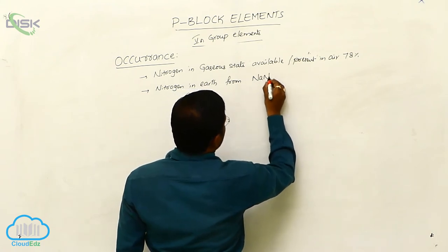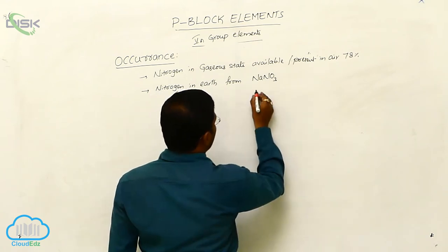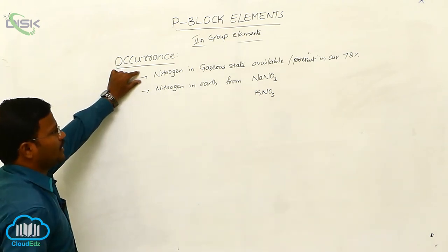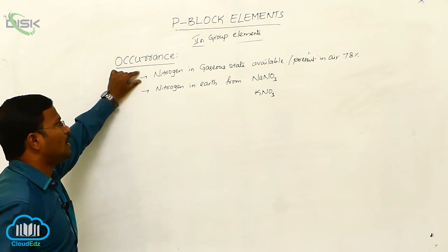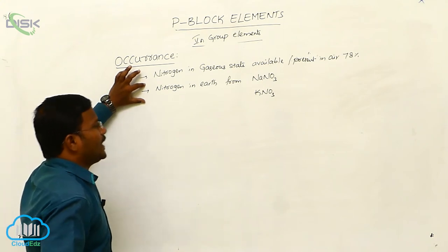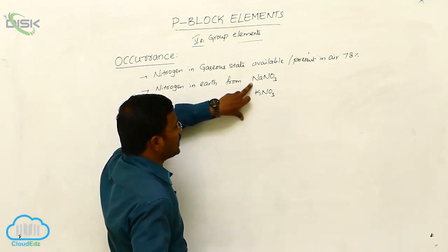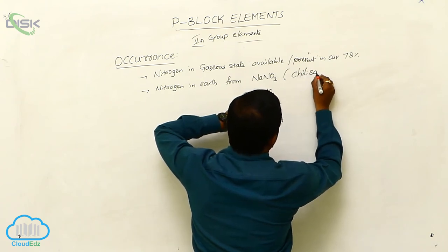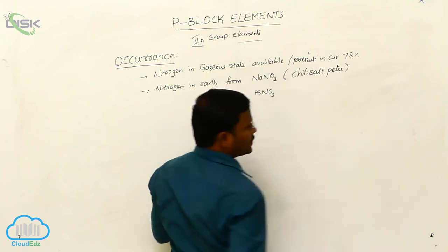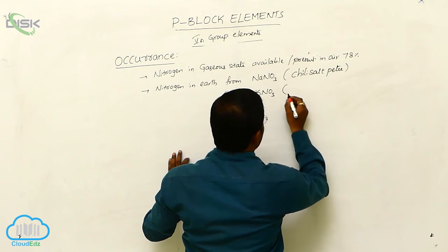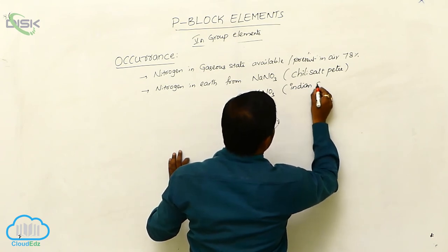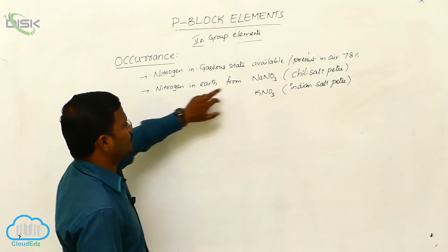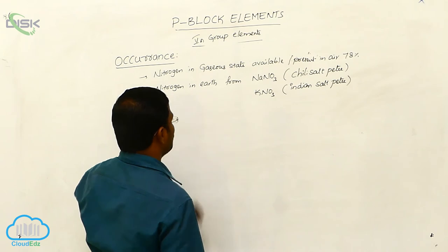The same nitrogen is available in the earth in the form of sodium nitrate and potassium nitrate. Sodium nitrate is called Chile saltpeter, whereas potassium nitrate is called Indian saltpeter. These are two different chemical substances which can produce nitrogen on earth.